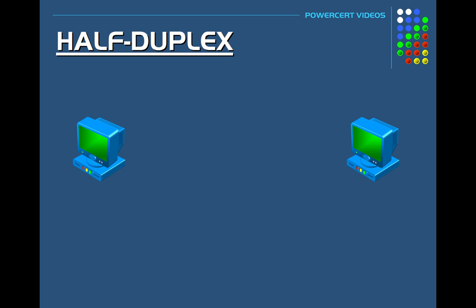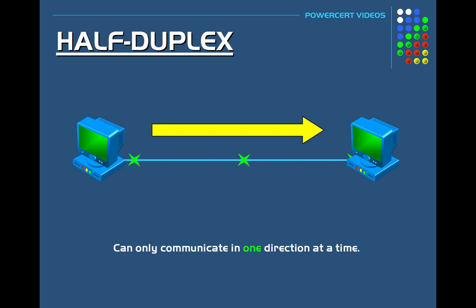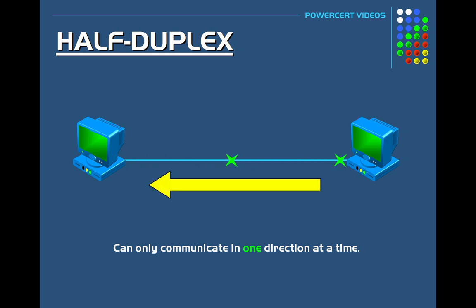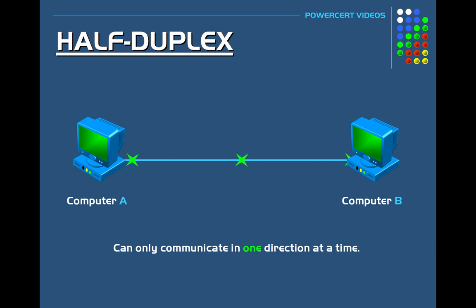In a half duplex network you have a point-to-point system where two devices are connected to each other using a network cable. These devices can communicate with each other in both directions, but in half duplex they can only communicate in one direction at a time. So if computer A is sending data to computer B, computer B has to wait until computer A is done before it can send data back. Data flows in one direction at a time — the two computers have to take turns.